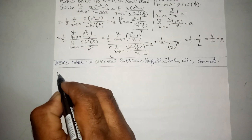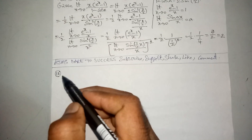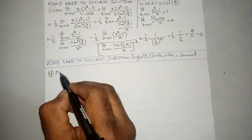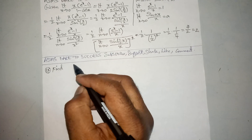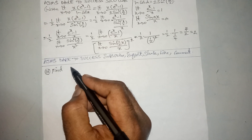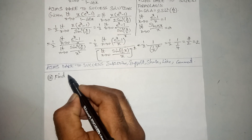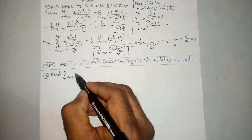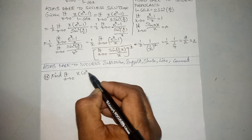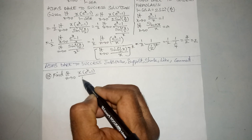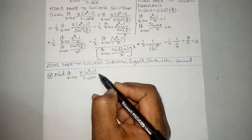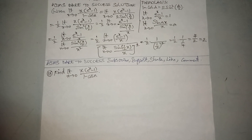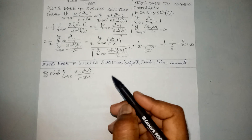Hi my dear friends, namaste. Today we are discussing limits and continuity. These types of questions will help you in foundation classes — it is an 'Aims to Success' question. Find the limit as x tends to 0 of x times a to the power x minus 1, divided by 1 minus cos x. Some students asked me this question and find it difficult.